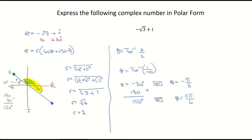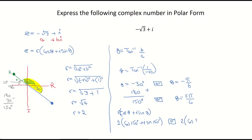So the final answer for example 2 is: Z equals 2 times cos 150 degrees plus i sin 150 degrees. Or in radians, Z equals 2 times cos(5π/6) plus i sin(5π/6). Make sure your calculator is in degrees or radians depending on what the question requires.